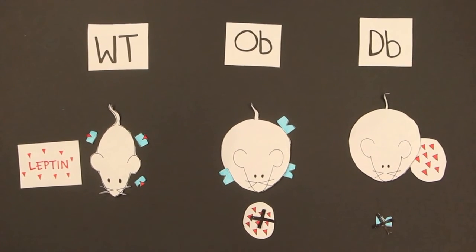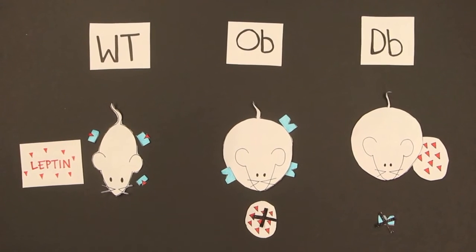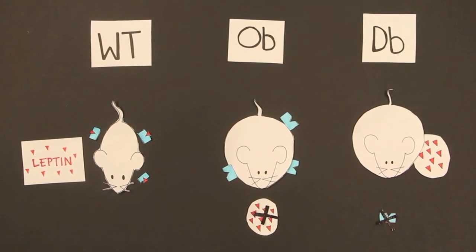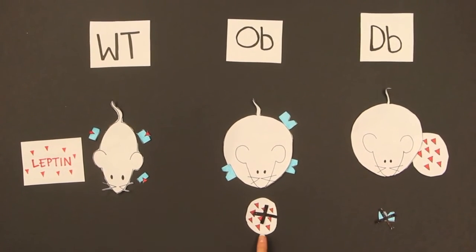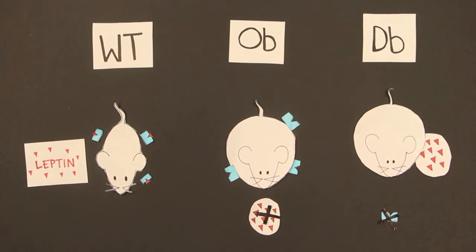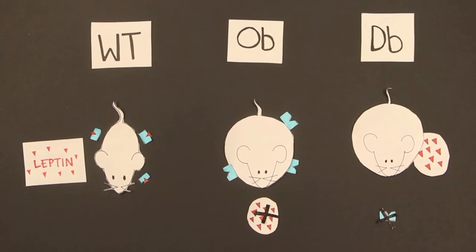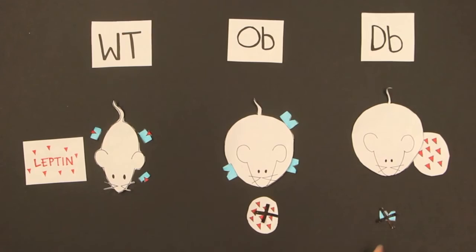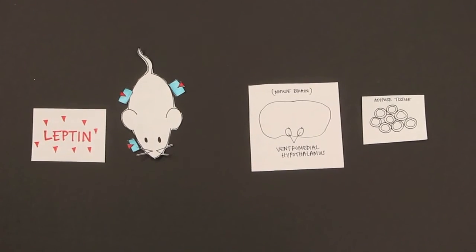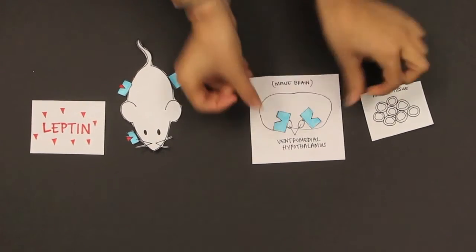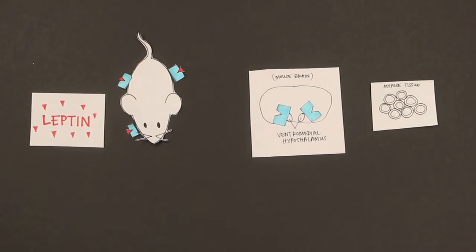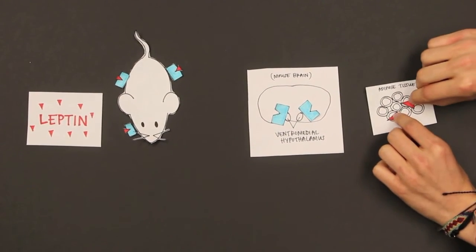The OB gene codes for leptin. That means that the mouse with an OB mutation will not have any of the leptin ligand. The DB gene codes for the leptin receptor. Mice with mutations of the DB gene do not have any receptors. The receptor is in the ventromedial hypothalamus of the brain. The leptin is produced in adipose tissue throughout the body.